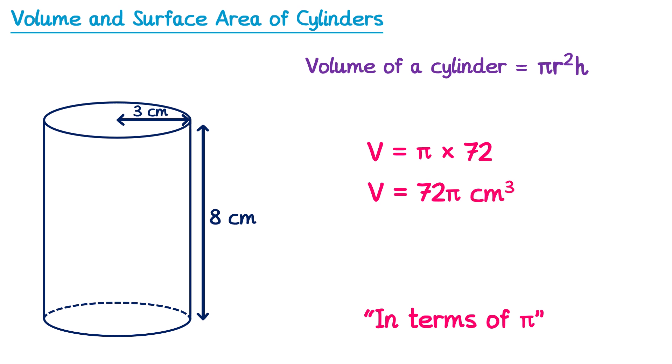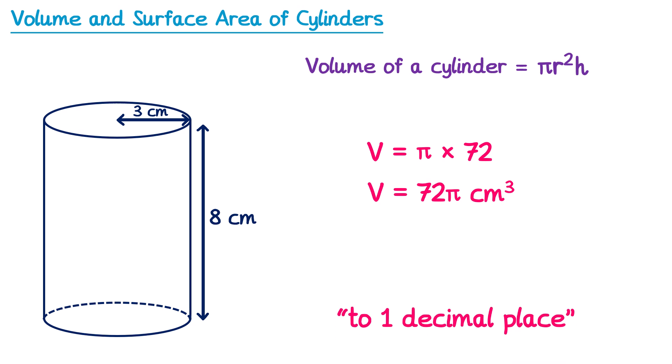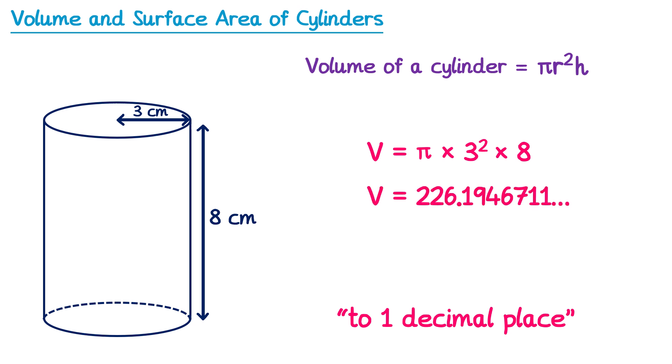Now if it's on the calculator paper it may well say something like give your answer to one decimal place. So let's redo this question and give the answer to one decimal place. Rather than doing 3 squared and then multiplying it by 8, we can just type this whole thing into the calculator: π times 3 squared times 8. If you change your format to a decimal, you'll end up with this number, which rounded to one decimal place is 226.2 centimeters cubed.